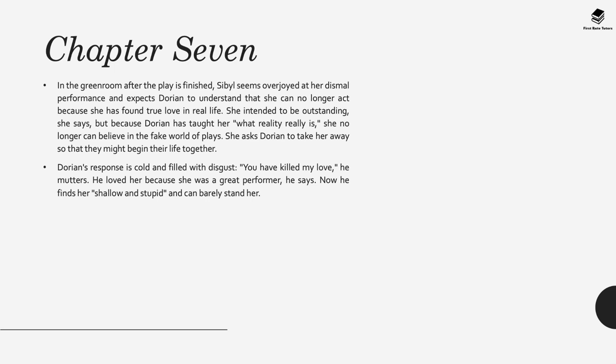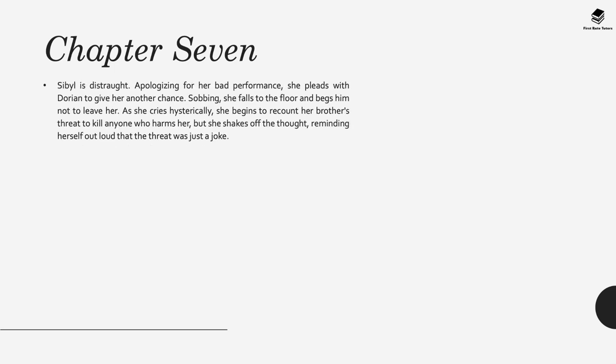Once the play is finished, Sybil seems overjoyed at her dismal performance and expects Dorian to understand that she can no longer act because she's found true love in real life. She intended to be outstanding, but because Dorian has taught her what love really is, she can no longer fake love in her stories. However Dorian is quite cold and his response is filled with disgust. The novel says he tells her, 'You've killed my love.' We learn that Dorian loved her because she was a great performer, but now finds her very shallow and stupid and can barely stand her. Sybil is distraught by his sudden shift—even as she apologises and pleads with Dorian to give her another chance, Dorian doesn't listen. He storms out and leaves her crying hysterically.